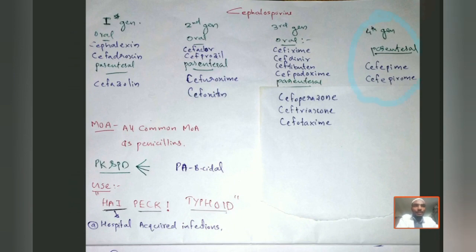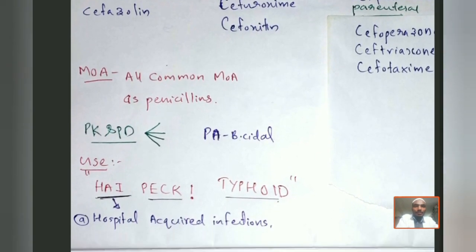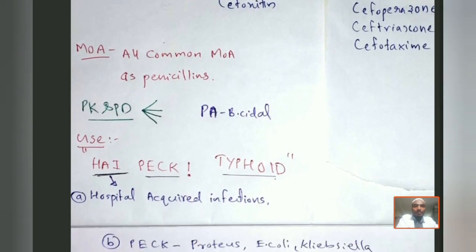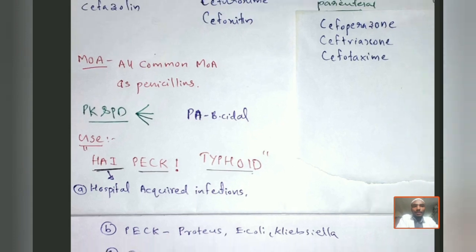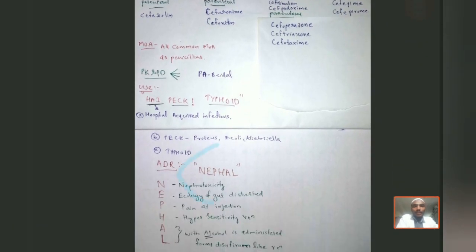To summarize: classification and a story were discussed earlier. All generations have oral and parenteral forms except the fourth generation, which only has parenteral forms. Mechanism of action is same as penicillin — inhibition of transpeptidase. The uses mnemonic is HIGH PEC TYPHOID, and the ADR mnemonic is NEPHAL. That concludes the discussion of cephalosporins.